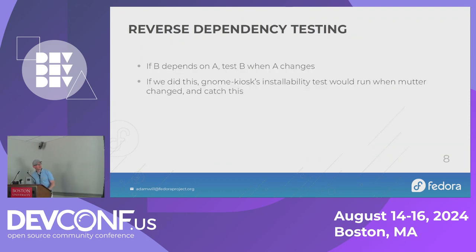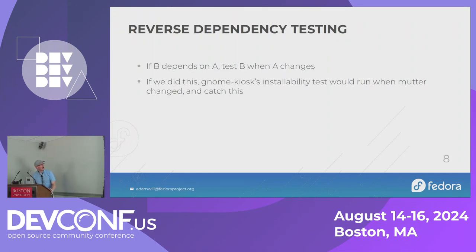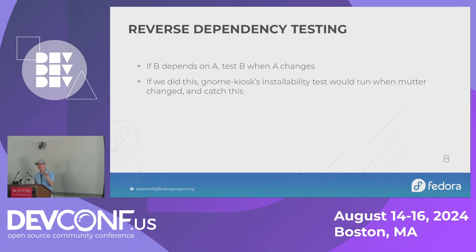What is reverse dependency testing? At root, it's pretty simple: if B depends on A, test B when A changes. So when Mutter changes, we should have tested that GNOME Kiosk was still installable, and we didn't. If we had reverse dependency testing, we would have run GNOME Kiosk's installability test when the Mutter update happened, caught this, and hopefully not blown up the compose.